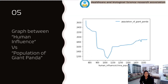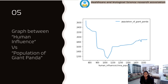In Figure 5, we have the graph between human influence and the population of Giant Pandas. We can see that as human influence increases day by day, the Giant Panda population decreases. China's government is trying many ways to control population growth, as the country had feared that population growth was hindering economic development. In 1979, the Chinese government implemented birth control programs and offered economic incentives to families with fewer children.